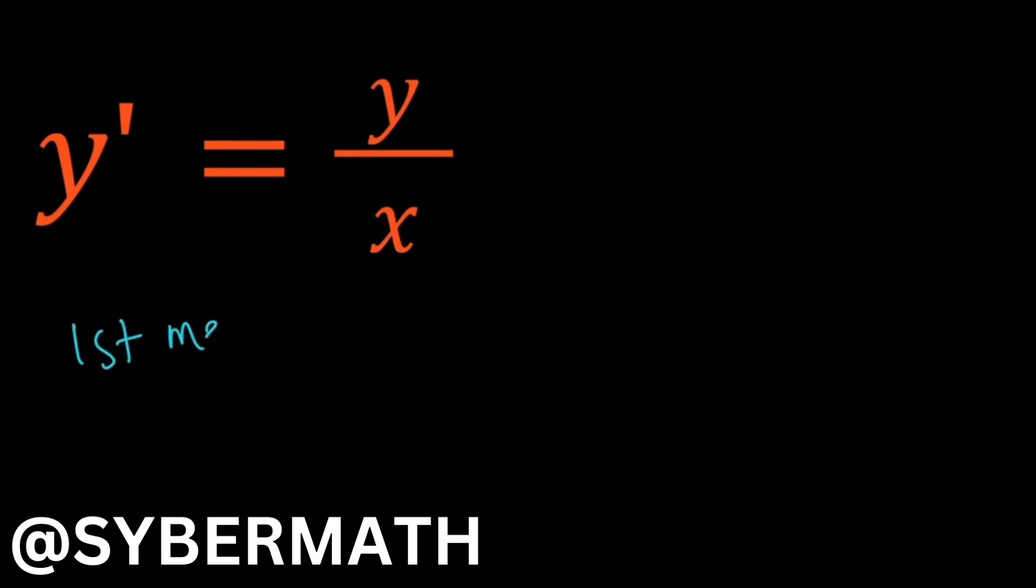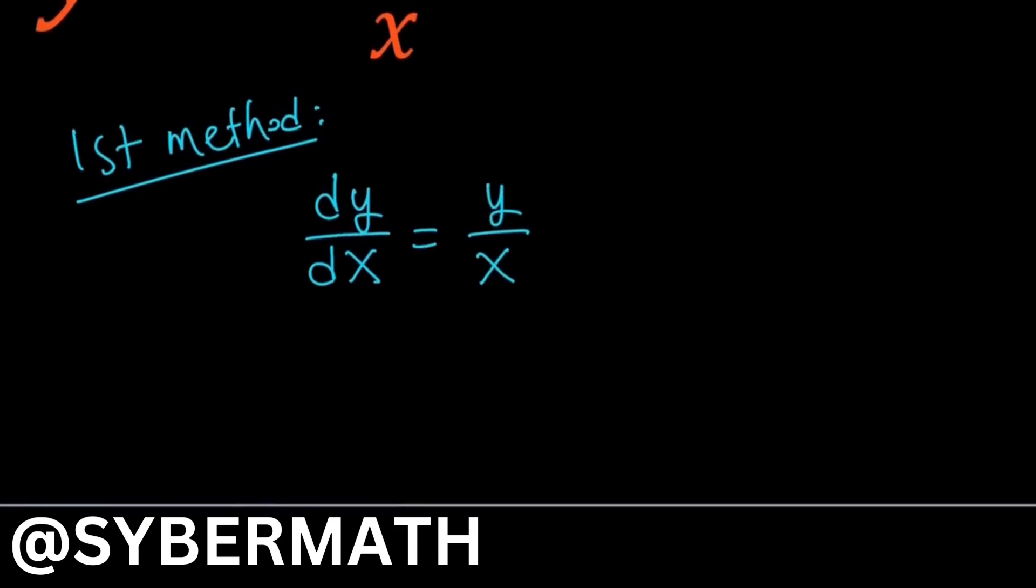So for my first method, I'm going to use a pretty standard approach because this is a separable differential equation. So we need to take advantage of that. y prime is the derivative of y with respect to x, so we can write it as dy over dx equals y over x, which is nice.